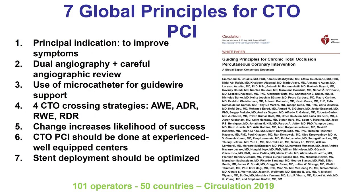To summarize, the seven global principles for CTO-PCI are: the principal indication is symptom improvement; dual angiography and careful angiographic review is critical; use of a microcatheter is essential to support the guidewire and allow exchanges; four crossing strategies can be applied using algorithms such as the hybrid or global CTO-crossing algorithm; changing strategy is important to increase likelihood of success; CTO-PCI should be done at experienced, well-equipped centers; and finally, crossing the CTO is not the end — stent deployment should be optimized for the best long-term results. Thank you.